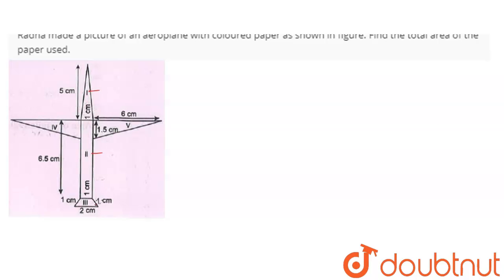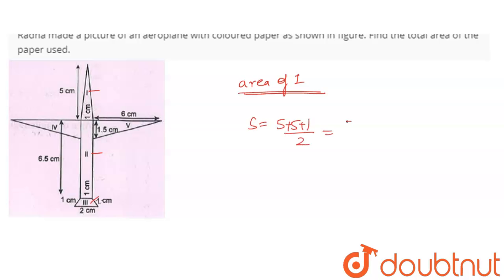I will use area 1, area 2 and area 3. For the area of the first shape, this is 5 and this is 1. So this will be 5 plus 5 plus 1 divided by 2, that is 5.5 cm.